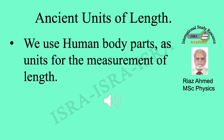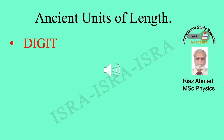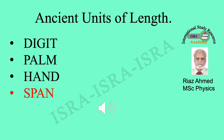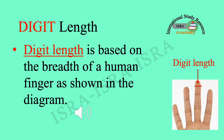We use human body parts as units for the measurement of length. The first one is digit, the second one is palm, the third one is hand, the fourth one is span, and the fifth one is cubit. Let me explain all these human body length units one after the other in the same order.